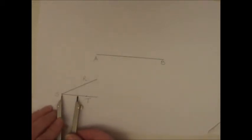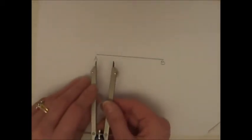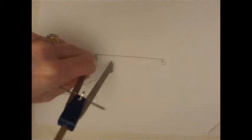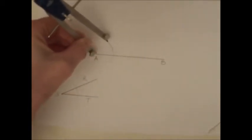Keeping my compass at exactly the same radius width, from point A I draw an arc with equal radius to intersect AB.